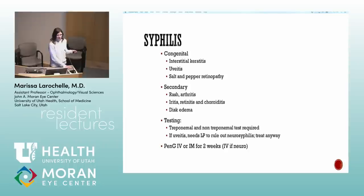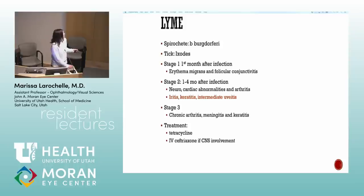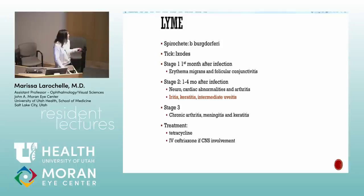Syphilis — the masquerader — can occur in any stage and look like anything. That's why we always test for it. Uveitis from syphilis is treated as neurosyphilis even if the LP is negative, but you still get the LP to follow treatment response over time. Lyme disease: most uveitis and keratitis occur in stage 2, can present as intermediate uveitis with targetoid lesions. Treat with tetracyclines.